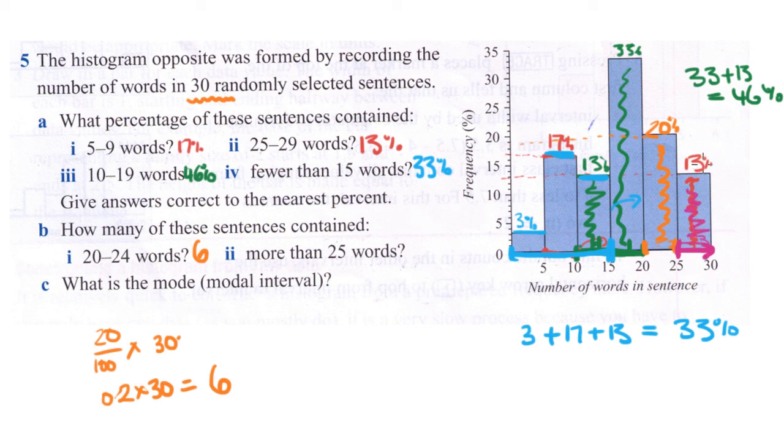They want to know the height of this bar, which is 13%, so 13% of this 30 total. That's 13 divided by 100 times 30, or 0.13 times 30 on your calculator, gives you 3.9. But they've asked you to round that up, so I would say that equals 4 is the answer.